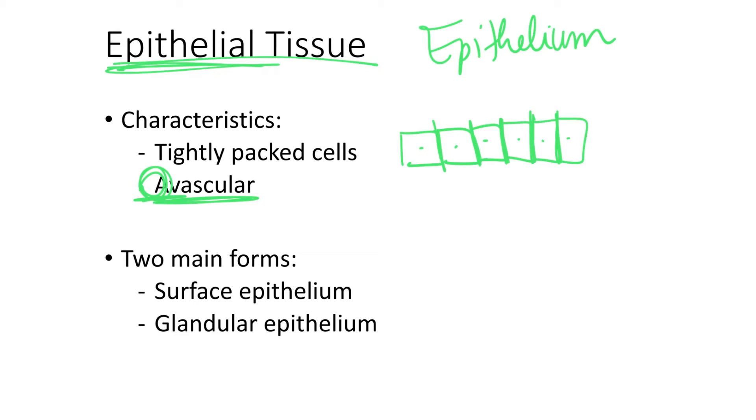When we look at these tightly packed cells forming the epithelial tissue, we see that they rest on top of a basement membrane. The basement membrane separates the epithelial tissue from the underlying connective tissue.